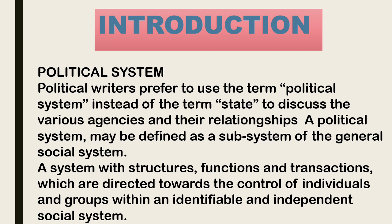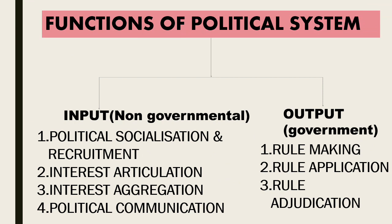Political system के five elements होते हैं: ideology (विचारधारा), जैसे dictatorship की क्या विचारधारा है या democracy में क्या विचारधारा होती है। The second is structure, जैसे political system centralized है या decentralized है। The third is function of political systems, fourth is process, and fifth is basis of legitimacy। Function of political system का model Gabriel Almond ने दिया था और इसे structural functionalism भी कहते हैं। Developing countries का structural functionalism अलग होगा और developed countries का अलग होगा।